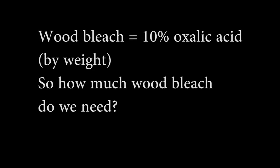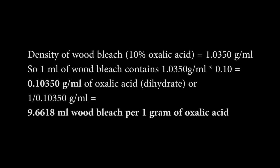The wood bleach that I used contains 10% oxalic acid, so I'll show you how to calculate how much wood bleach is needed. The density of 10% oxalic acid is 1.035 grams per milliliter. That means one milliliter of wood bleach contains 0.1035 grams of oxalic acid, or dividing that into one, we need 9.6618 milliliters of wood bleach to get one gram of oxalic acid.